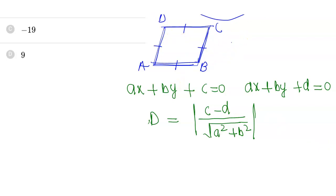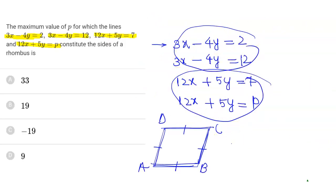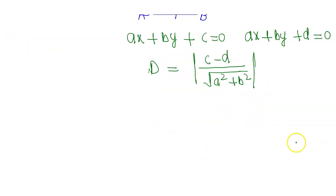For the first pair of lines 3x - 4y = 2 and 3x - 4y = 12, distance AB equals CD. So |12 - 2| / √(9 + 16) = 10 / √25 = 10/5 = 2.